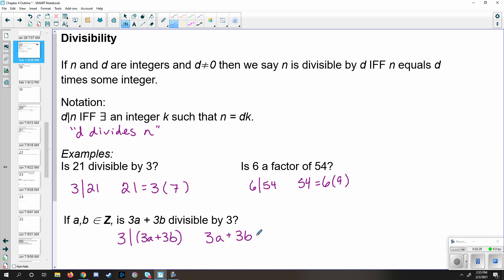Can we write that as 3 times some integer value? Well, if we factor out a 3 here, we're left with 3 times (a plus b). And the closure of the integers under addition tells us that a plus b must be an integer. So yes, this is also true.